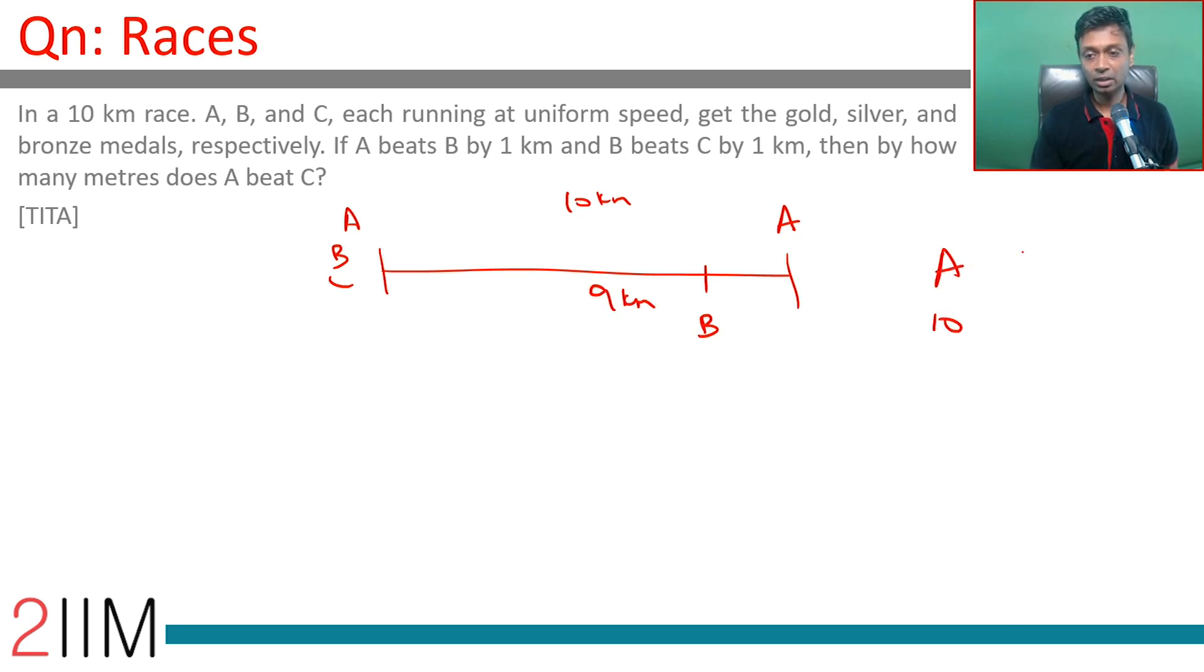When A does 10, B does only 9. And then a little while later, B finishes. At that time, C has done only 9 kilometers.